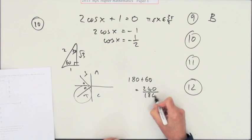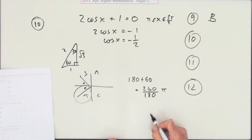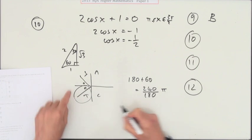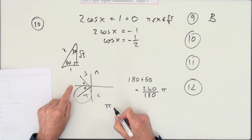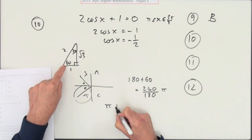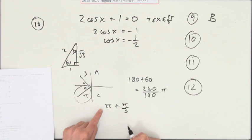You can either do it in degrees and say 180 plus 60, so you've got 240, then change it to radians by writing over 180 times π. They both divide by 6, that's going to be 4 upon 3.